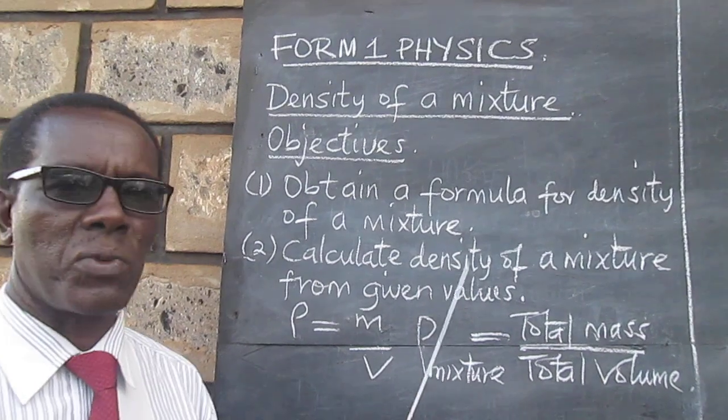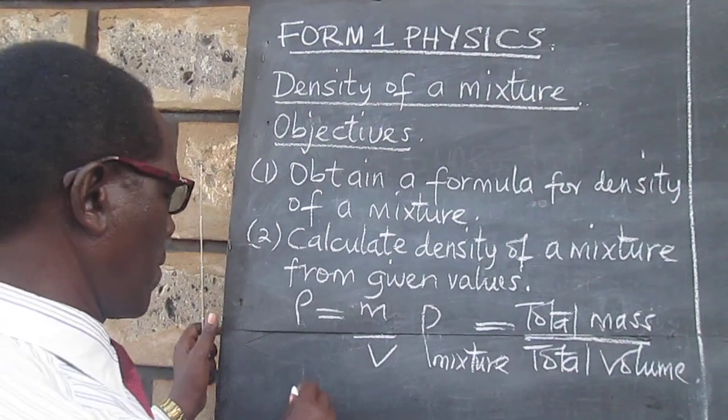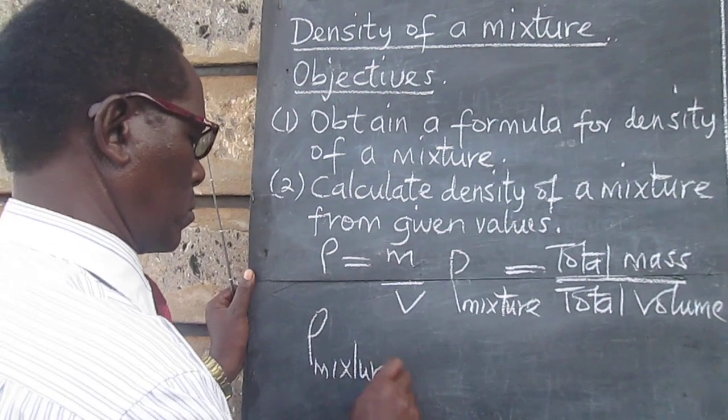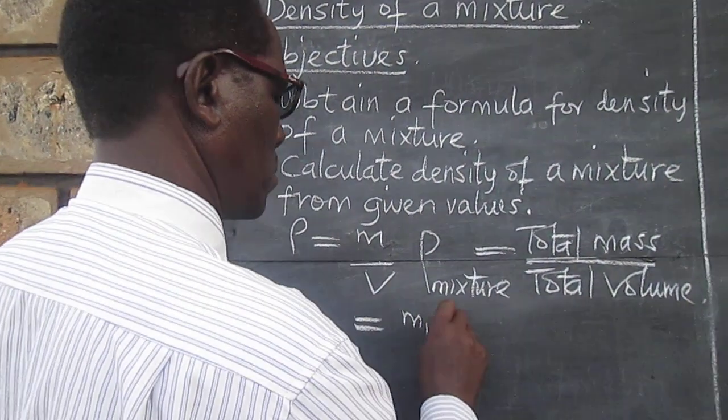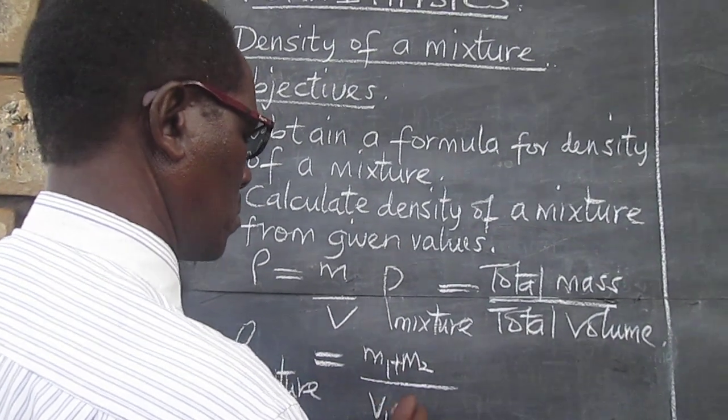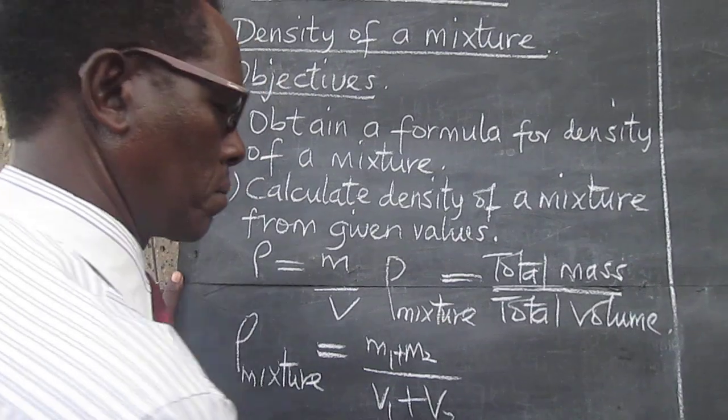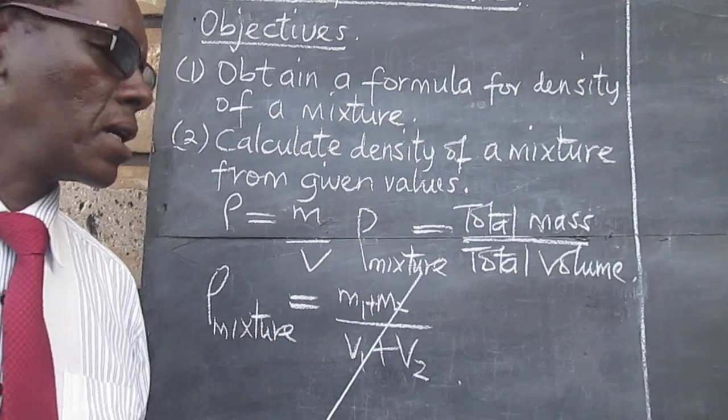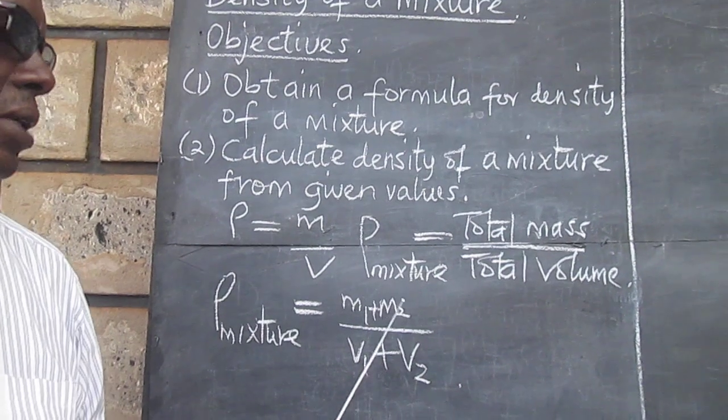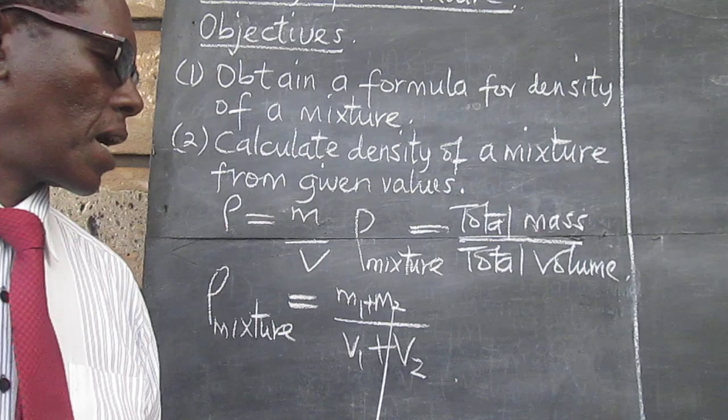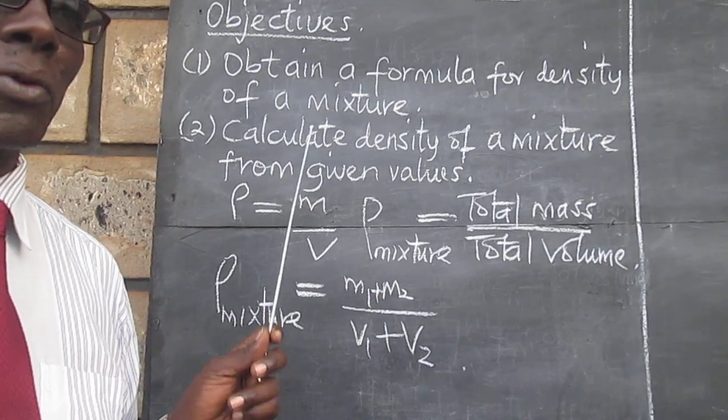In symbols, we can also write... Whereby we have the mass of the first liquid, and the mass of the second liquid added together, and the volume of the first liquid added to the volume of the second liquid.